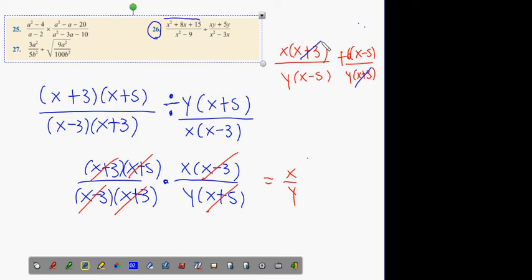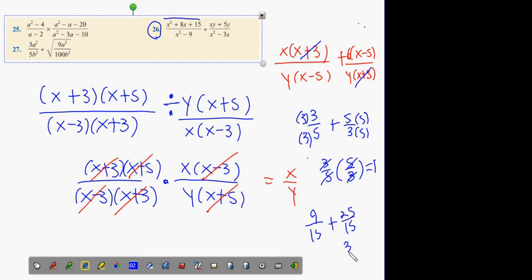It's basically what is the difference between 3 fifths plus 5 over 3 or 3 fifths multiplied by 5 over 3. When you multiply 3 fifths by 5 over 3, what happens? 5 cancels with 5, 3 cancels with 3. Your answer is 1. When you add them, you have to get a lowest common denominator.